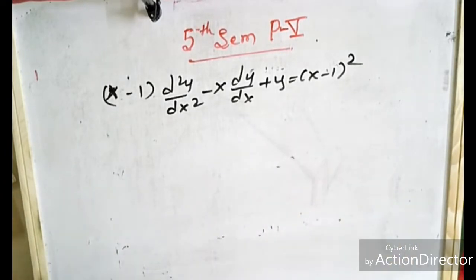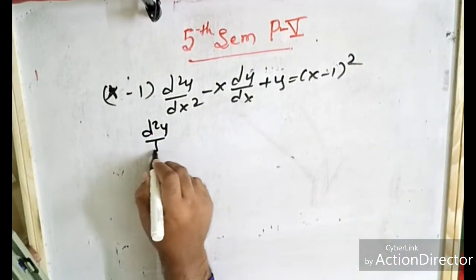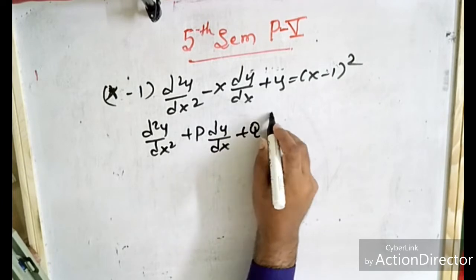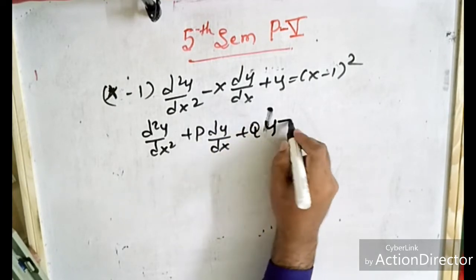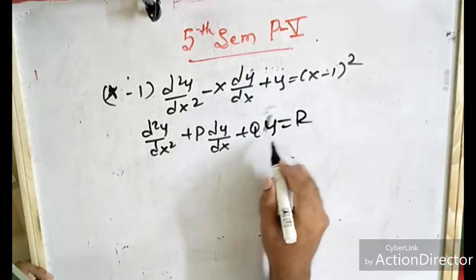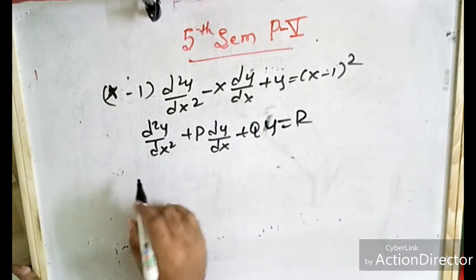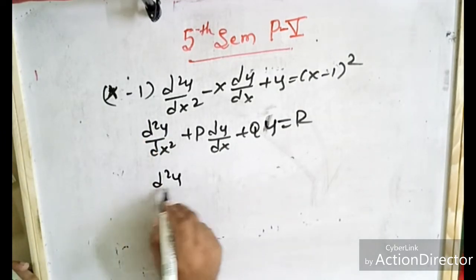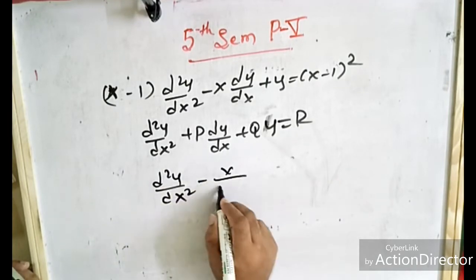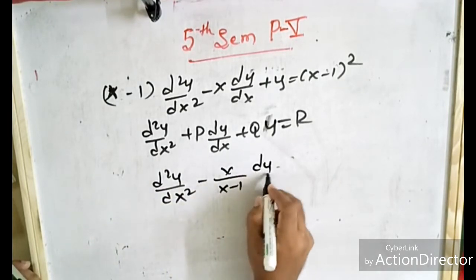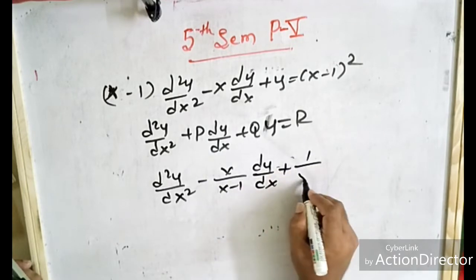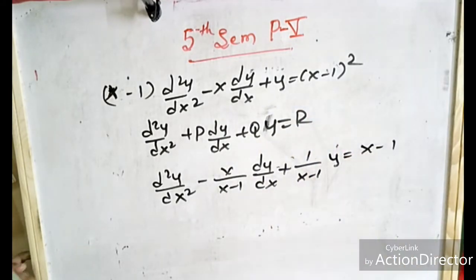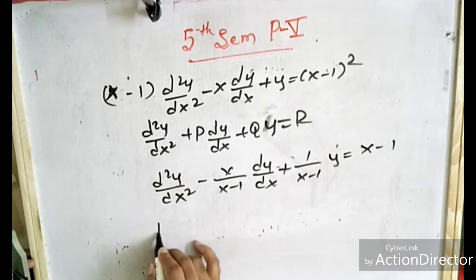We have to compare this with the standard form: d²y/dx² + P·dy/dx + Qy = R. This is not yet in standard form, so we have to divide throughout by (x minus 1). This gives: d²y/dx² minus [x/(x minus 1)]·dy/dx plus [1/(x minus 1)]·y = (x minus 1).